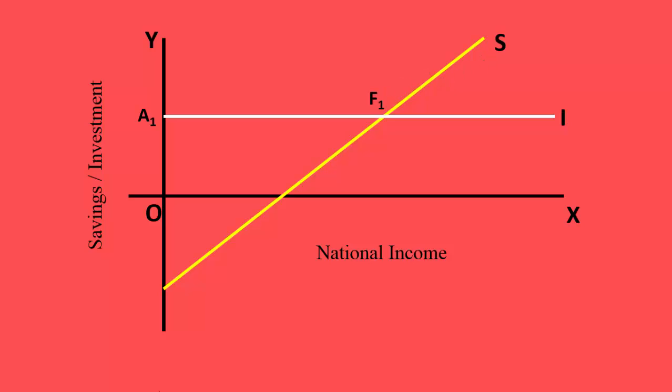They intersect at point F1. This is the equilibrium point where the economy is in equilibrium. Y1 is the equilibrium level of income. This occurs when planned savings is equal to planned investment.